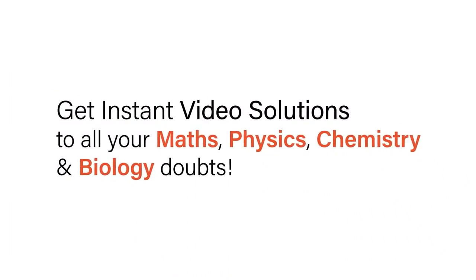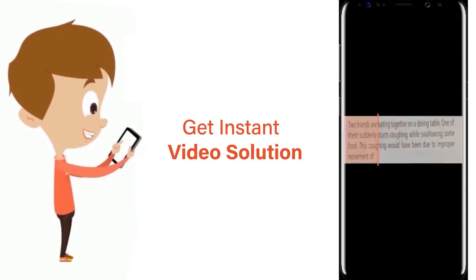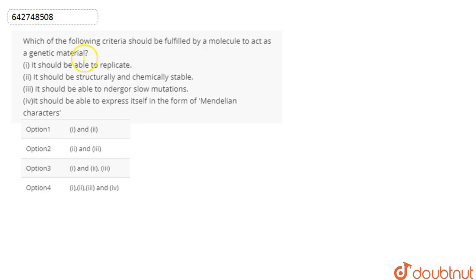With Doubtnet, get instant video solutions to all your maths, physics, chemistry and biology doubts. Just click the image of the question, crop the question, and get instant video solution. Download Doubtnet app today. In this question we are asked which of the following criteria should be fulfilled by a molecule to act as genetic material.